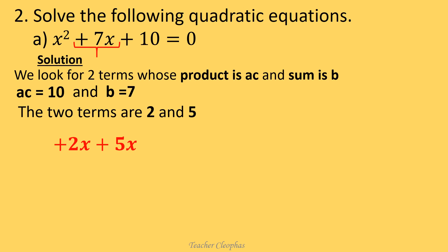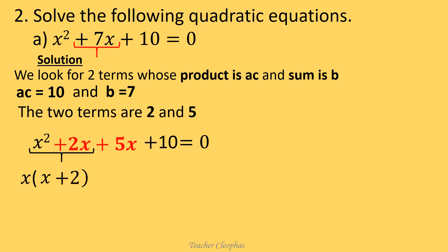We complete our equation by writing x squared plus 2x plus 5x plus 10 equals to zero. Now we take the first pair, which is x squared plus 2x, and look for the common term. The common term here is x. So we write x and open brackets. Inside the brackets, what can we multiply by x to give us x squared plus 2x? That is x plus 2. Then we close our brackets. Then we move to the next pair, that is 5x plus 10. The common term here is positive 5. Open brackets, inside we have x plus 2. Then close brackets equal to zero.